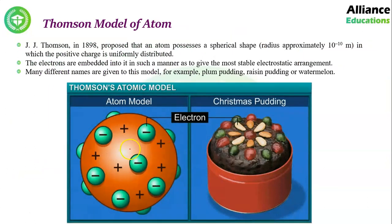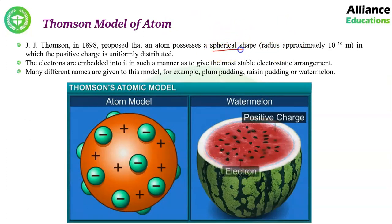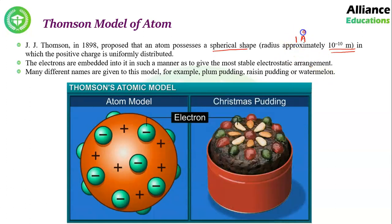The next topic is Thomson's model of atom. J.J. Thomson proposed an atomic model in 1898. Before this, we saw experiments in the last lecture — and on the basis of those experiments, he proposed this atomic model. He stated that the atom is spherical in shape and its radius is approximately 10⁻¹⁰ meters, which is equal to 1 Ångström.